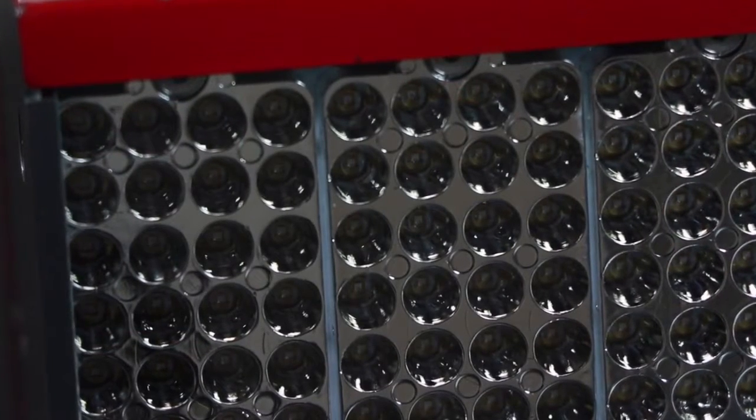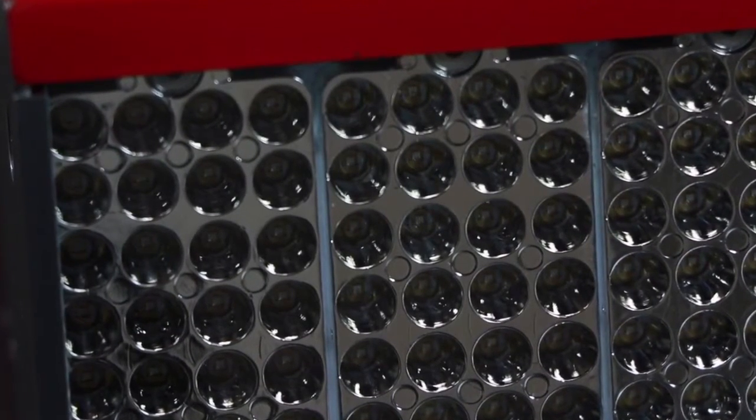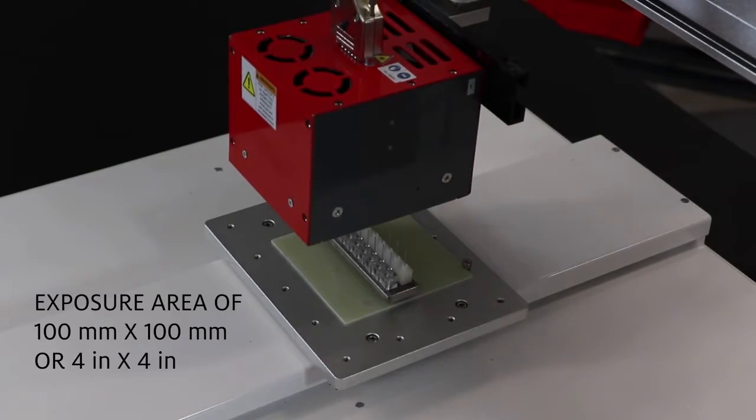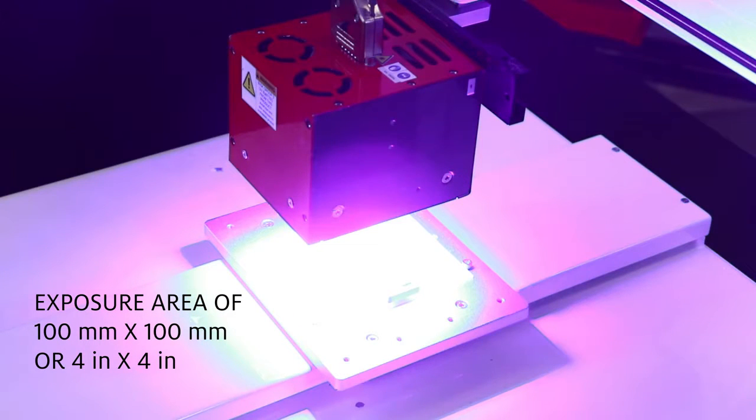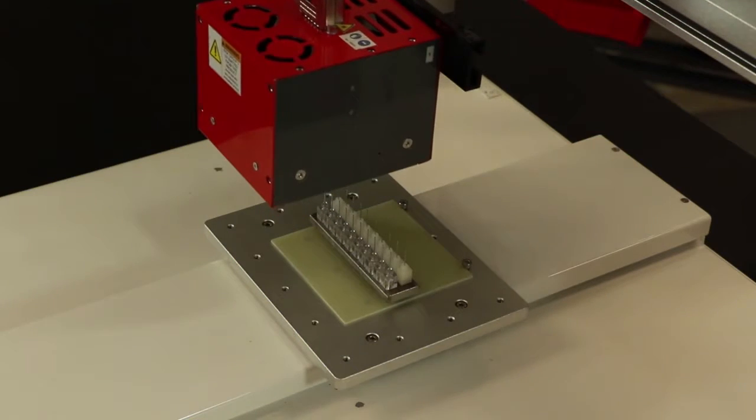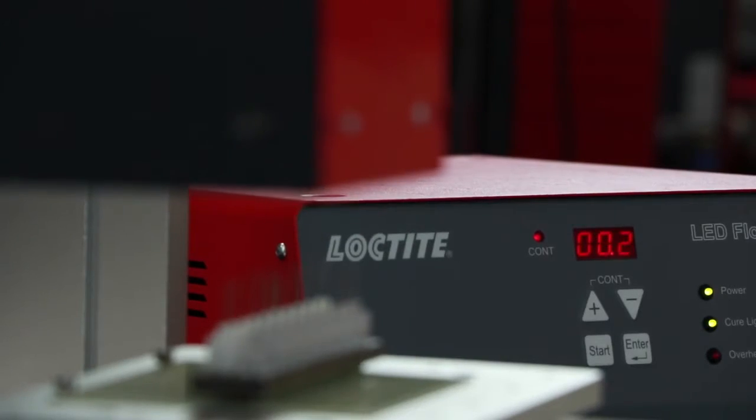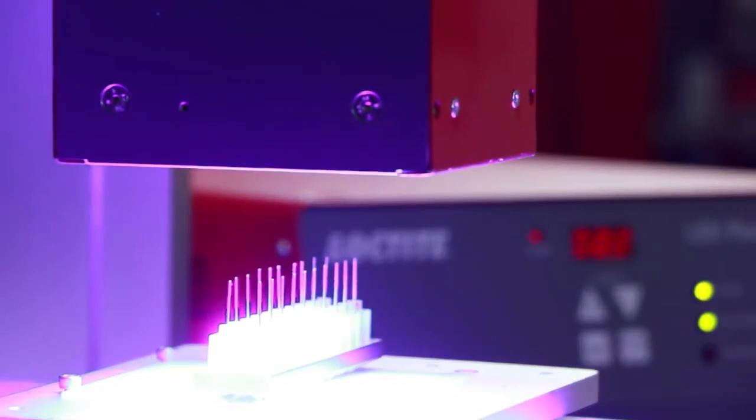Equipped with 144 high-powered LEDs that create an exposure area of 100 millimeters by 100 millimeters or 4 inches by 4 inches, the Loctite CL30 LED flood system is ideal for curing large uniformed application areas.